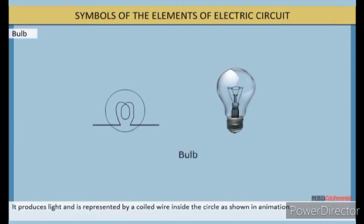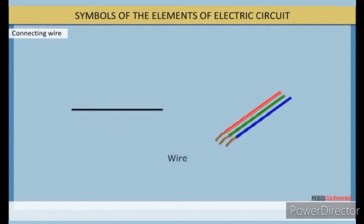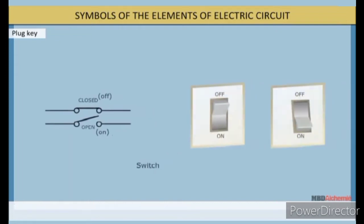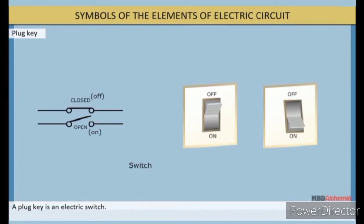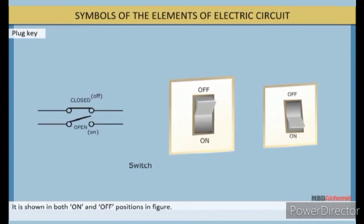Bulb: It produces light and is represented by coiled wire inside the circle as shown. Connecting wire: The connecting wire is represented by a straight line. It is usually made of copper and provided with insulation. Plug key: A plug key is an electric switch. It is shown in both on and off positions in figure.